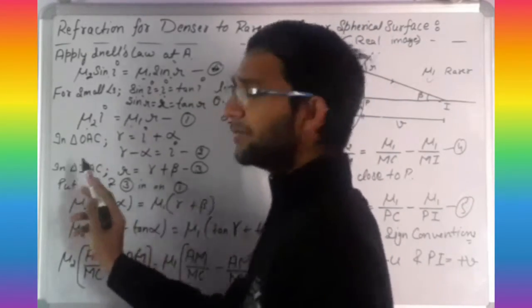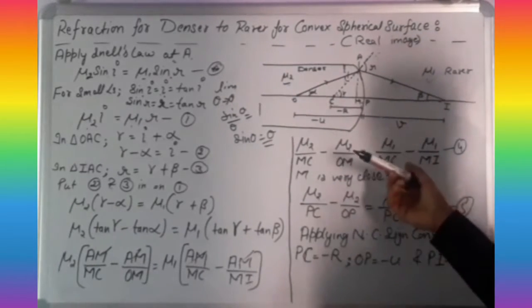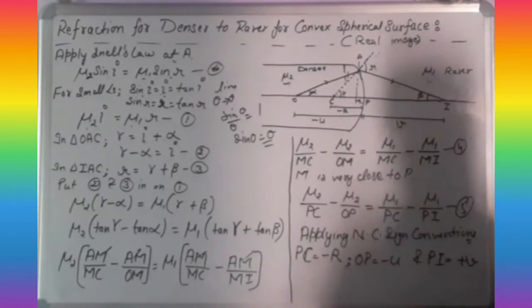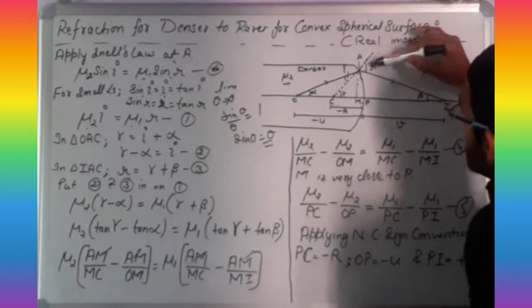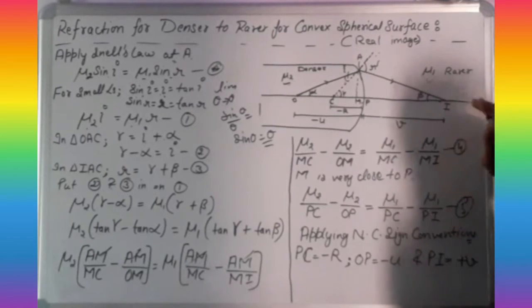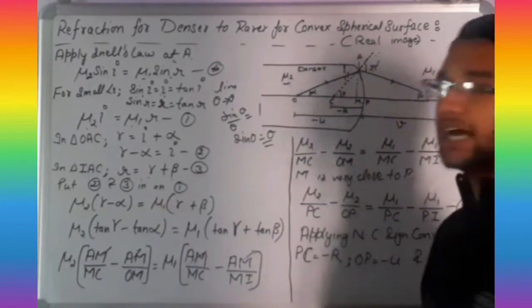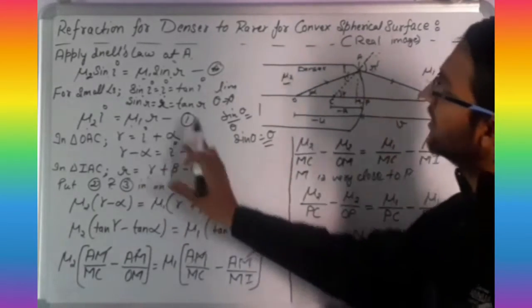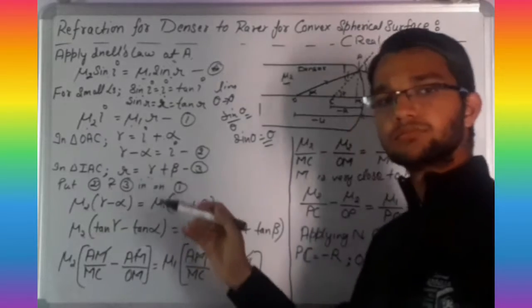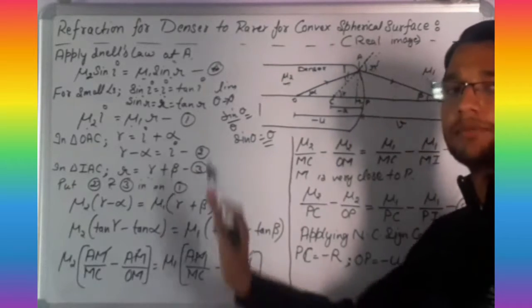For the next step, we take the image triangle, which is triangle IAC. In this triangle, R is the exterior angle and gamma and beta are the interior angles. By the exterior angle property, R equals gamma plus beta. This is equation three, and we keep these values as they are without further manipulation.